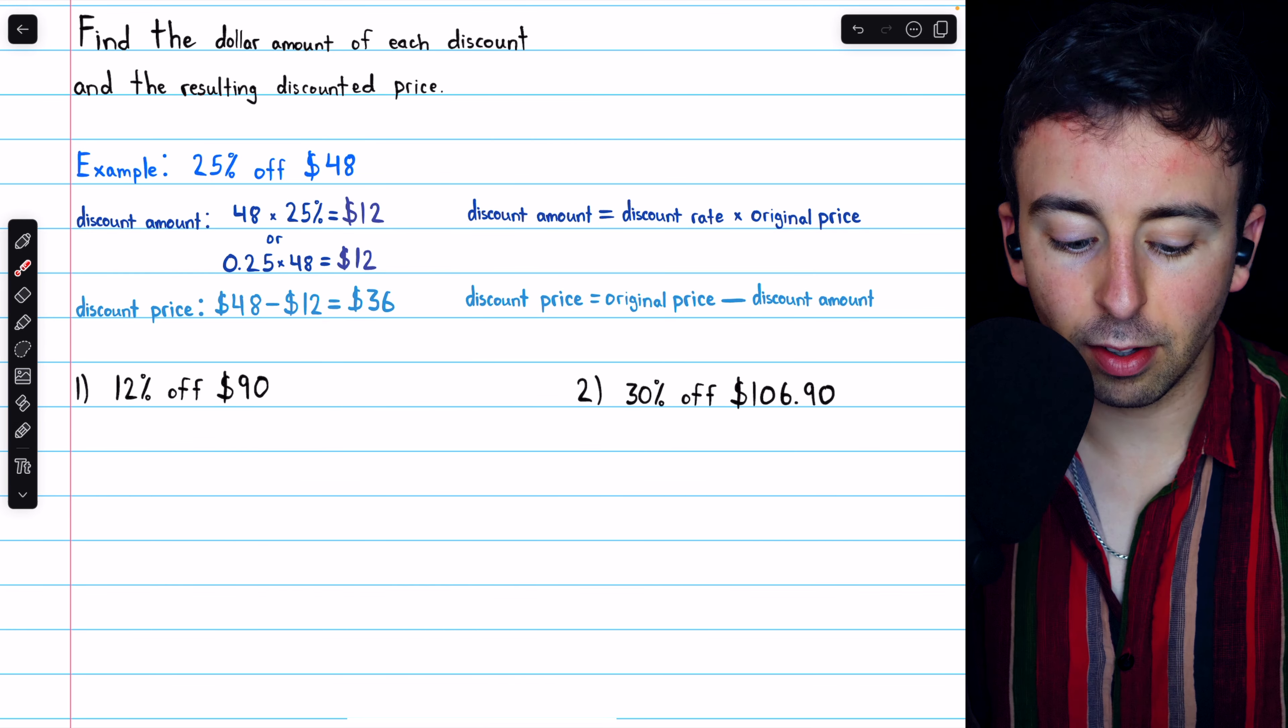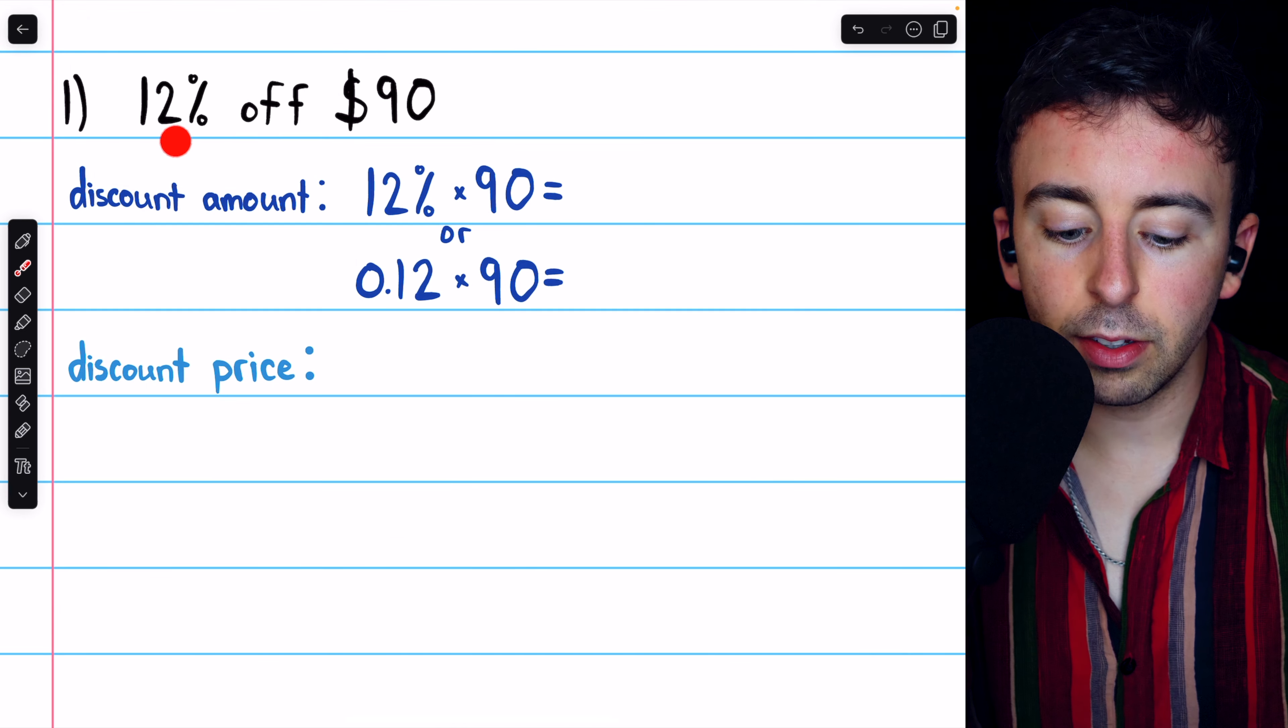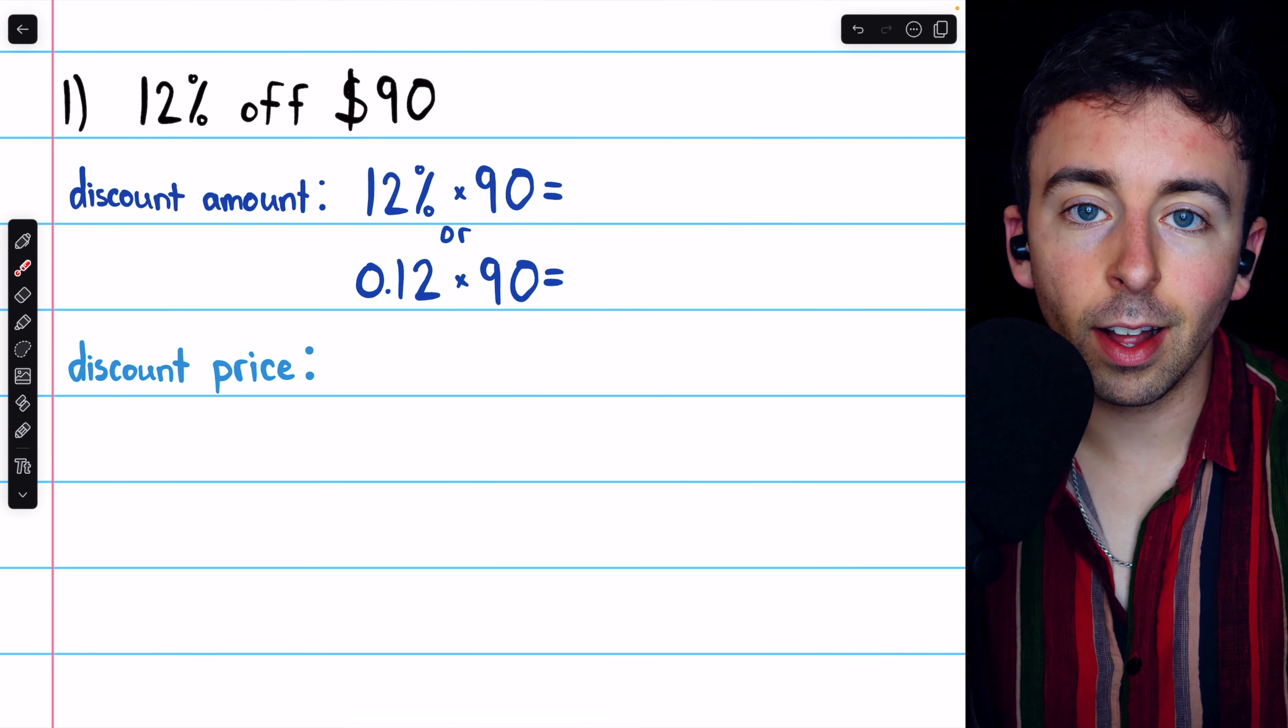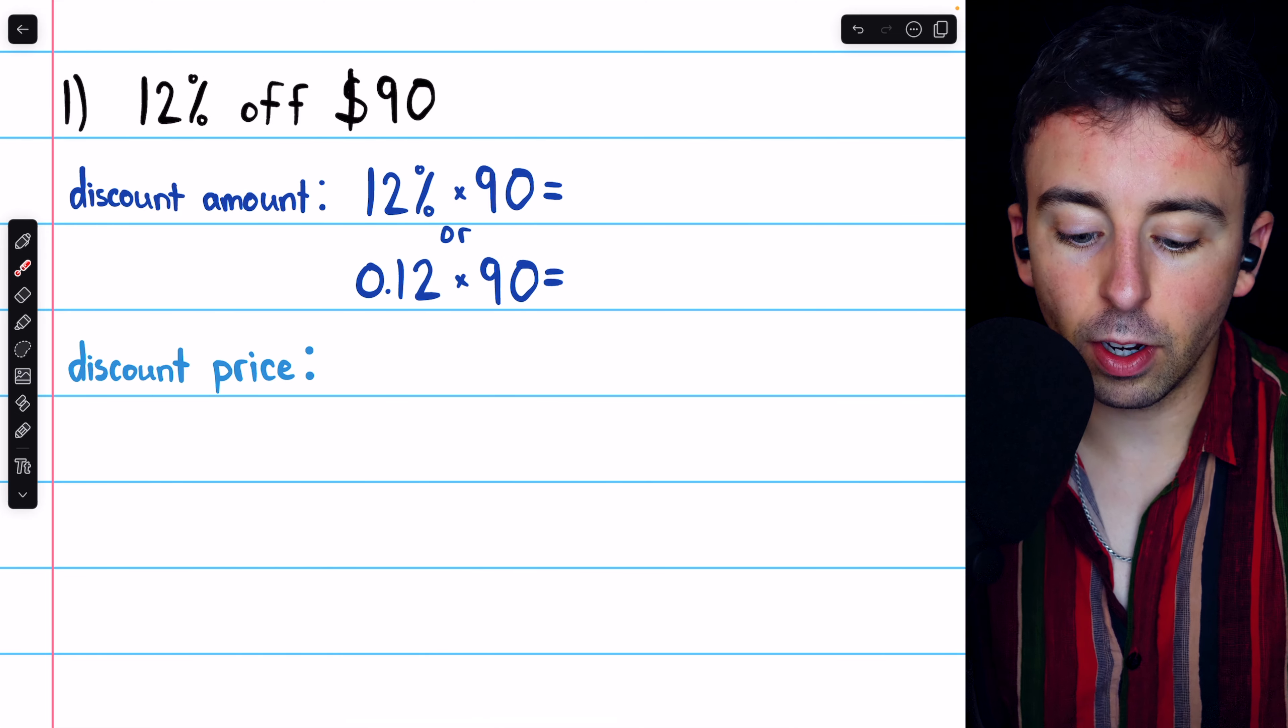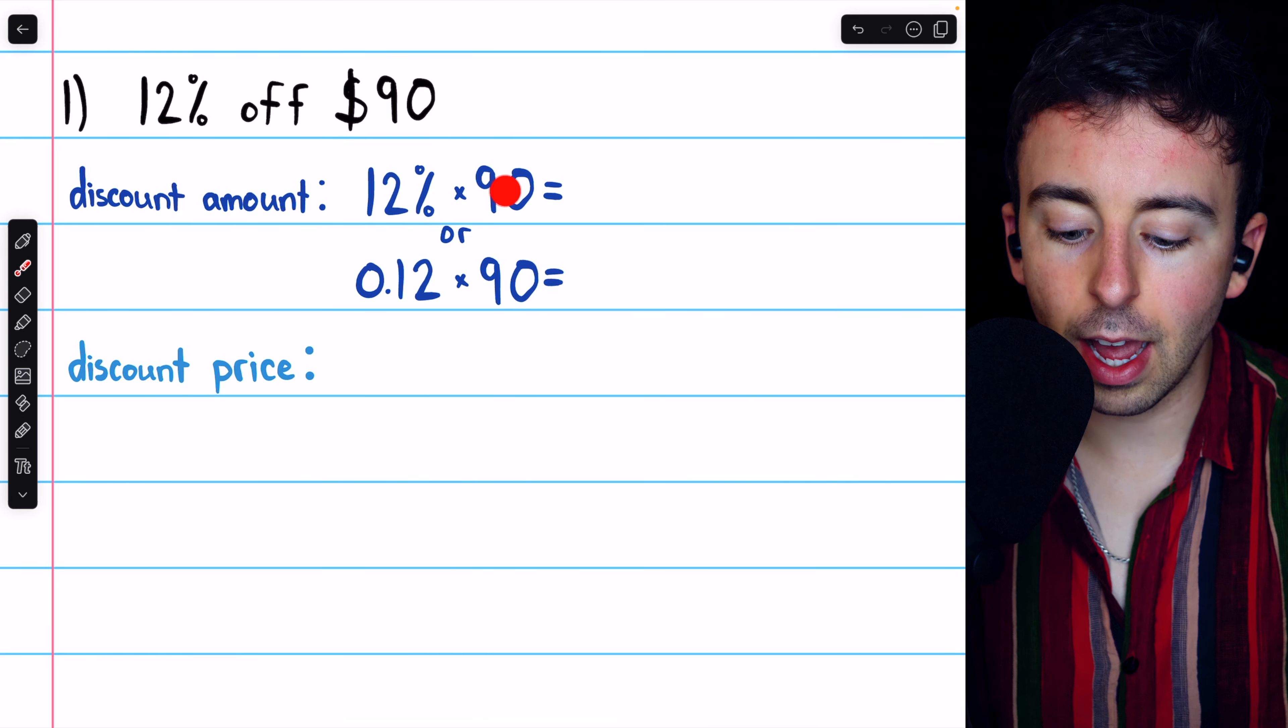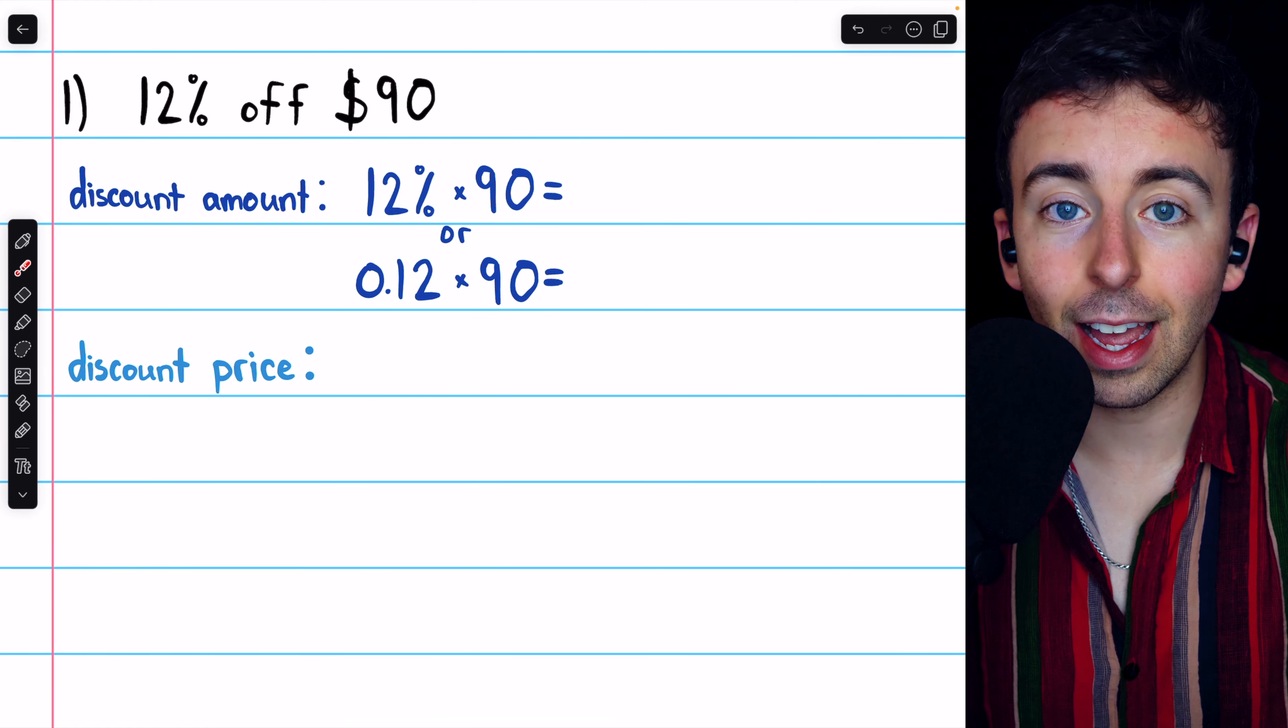Alright, let's try these steps to solve these two problems. For problem one, the discount is 12% off $90. To calculate the discount amount, we need to do multiplication, 12% times 90, or 0.12 times 90, if we write it as a decimal.